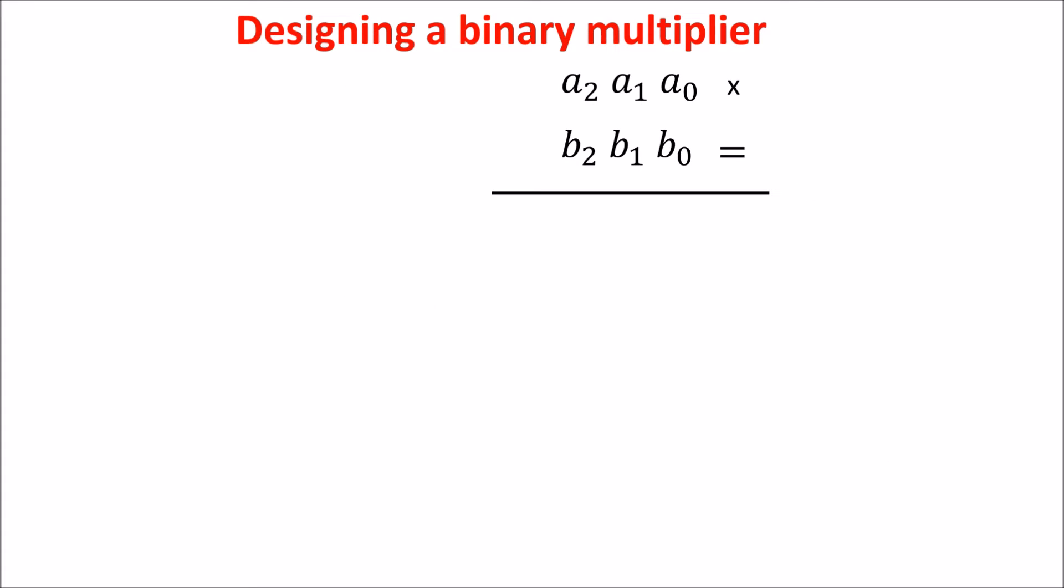Let's see in general the multiplication of 3-bit numbers. First, I have to multiply B0 times A0, then B0 times A1, and B0 times A2. Later, we start with B1 times A0, but we shift left of one digit, and so on.